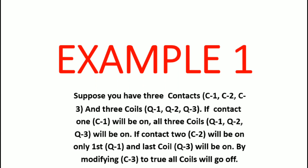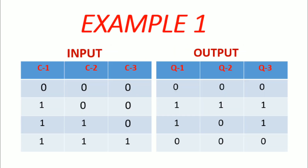Now let's look at the boolean form of the question. As you can see, we have three inputs and three outputs. Our initial condition is that when all of the inputs are zero, all of the outputs are zero. Our first part: when C1 is true, Q1, Q2, Q3 are true. When C1 and C2 are true, Q1 and Q3 go true and Q2 goes false. The last part: when C1, C2, and C3 are all true, all of the coils go false.